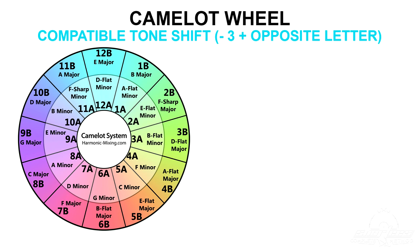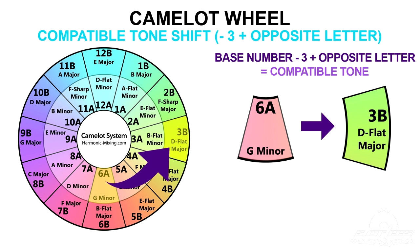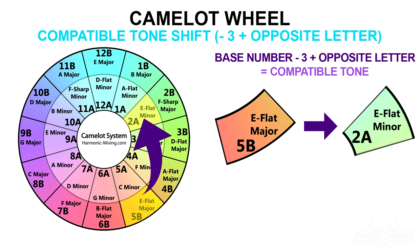You can also try to switch between tonally compatible keys by using a mathematical equation: subtract 3 from the base number and change the letter to the opposite letter. For example, you could try 6A G minor mixing into 3B D-flat major — 6 minus 3 equals 3, then switch the letter from A to B to get 3B. Another example would be 5B C minor to 2A F-sharp major — 5 minus 3 equals 2, then switch the letter from B to A to get 2A. But again, like the other bigger jumps around the wheel, this is most definitely not foolproof.